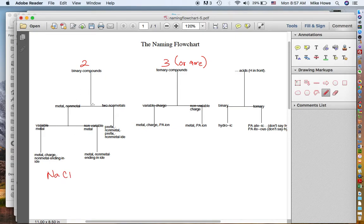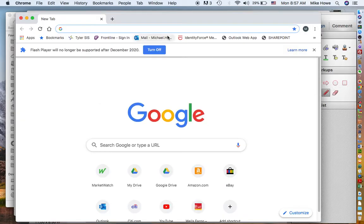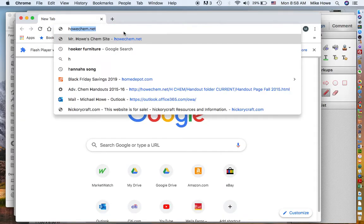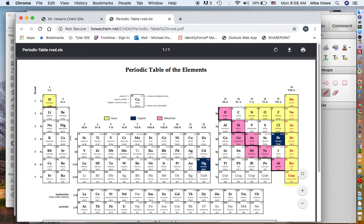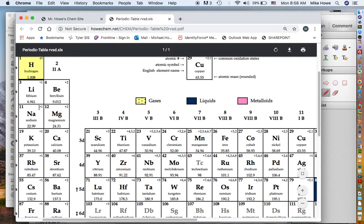You go down and decide what you've got. So you've got a metal and a non-metal, or do you have two non-metals? Well, sodium chloride is a metal and a non-metal. Sodium is a metal, chlorine is a non-metal. So if it's a metal and a non-metal, then you have to decide is sodium a variable metal or a non-variable metal.